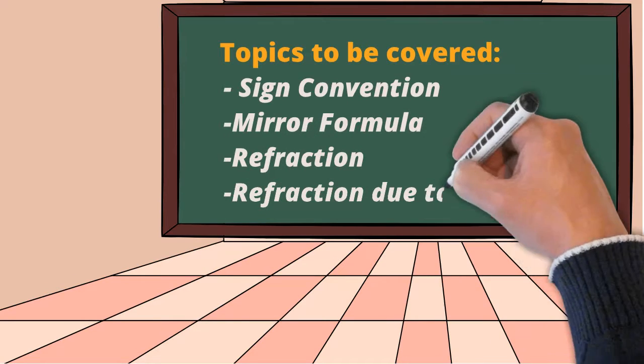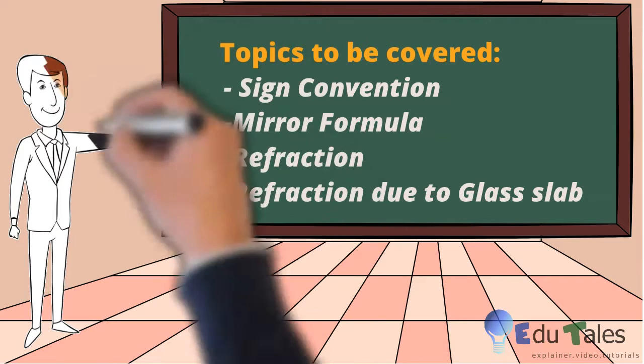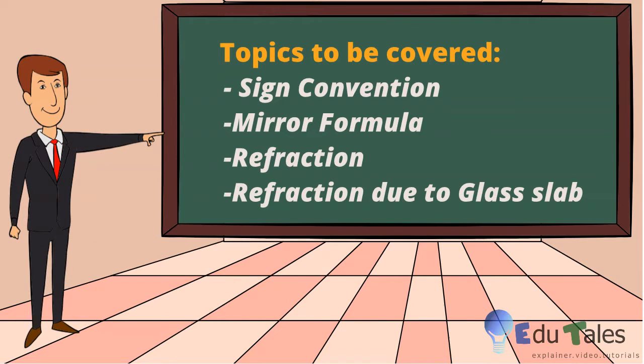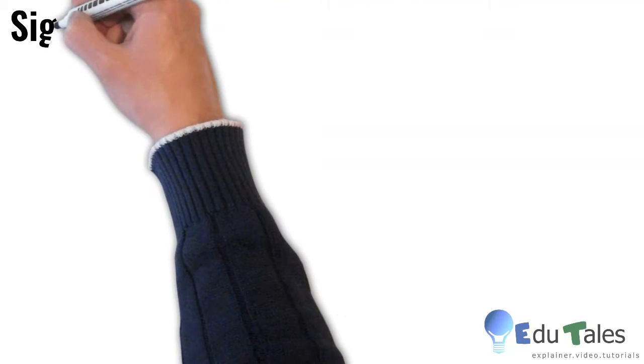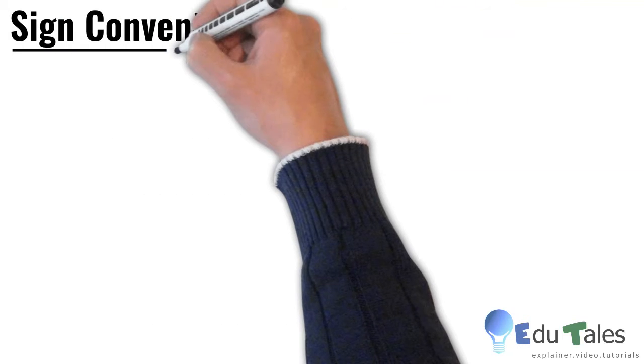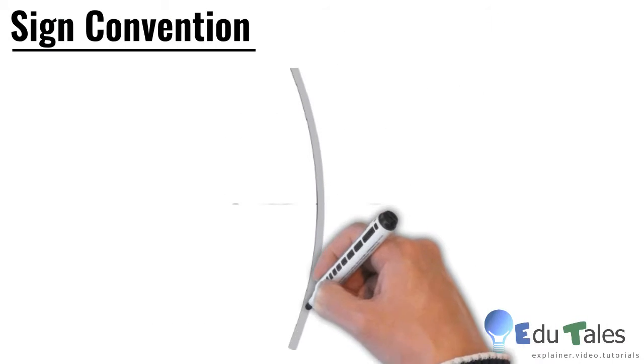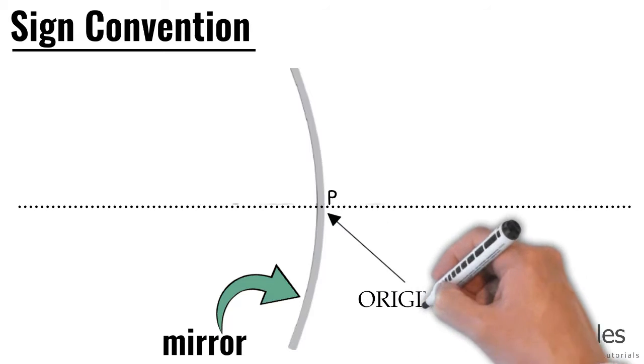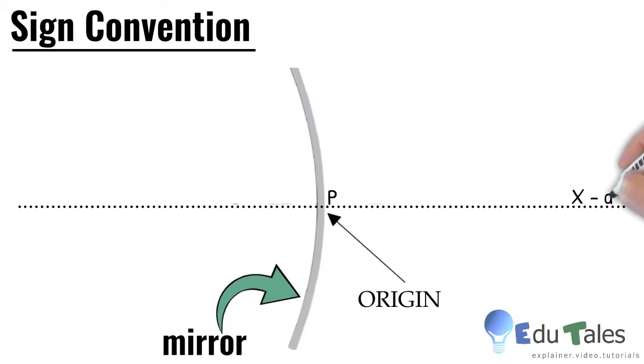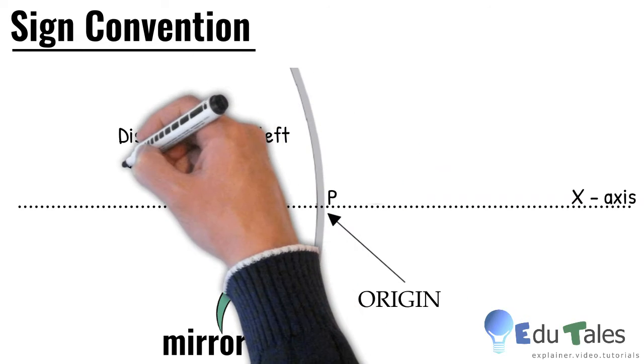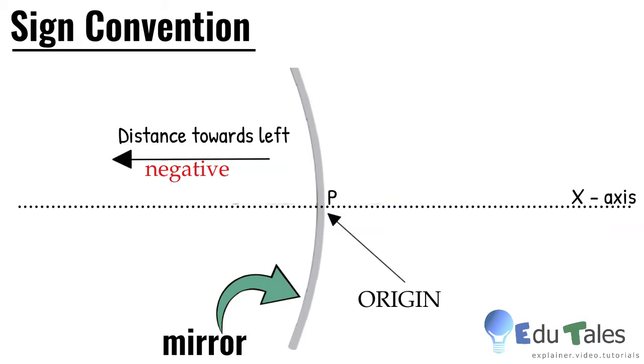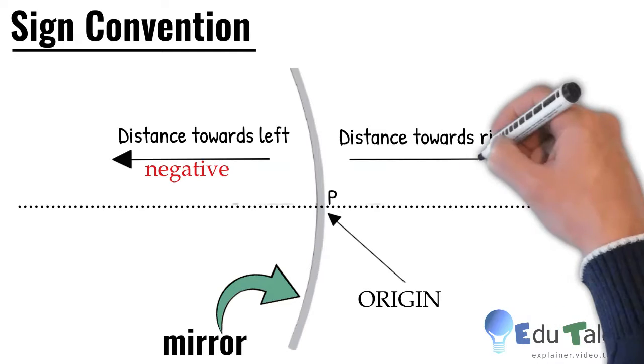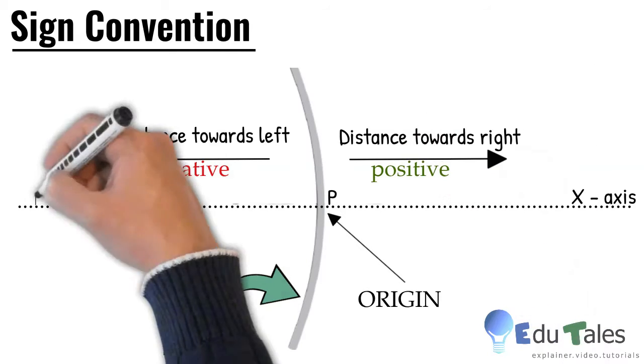In this convention we shall follow a set of certain sign conventions called the new Cartesian sign conventions. In this convention the pole P of the mirror is taken as the origin and the principal axis is taken as the x-axis of the coordinate system. All the distances parallel to the principal axis are measured with respect to the pole, and therefore all the distances to the left of the pole are negative while all the distances to the right of the pole are positive.